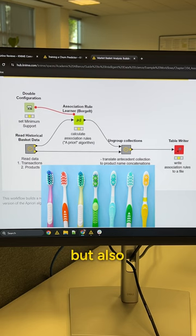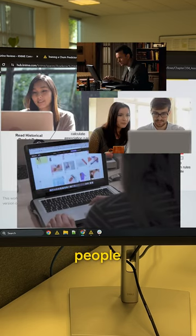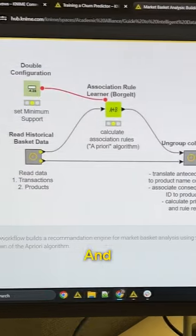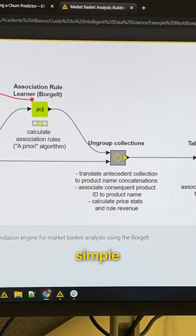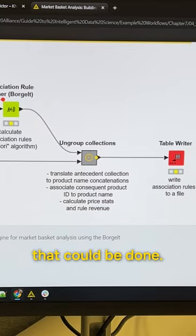And they're looking not just at your purchase history but also the purchase history of other people to be able to make those recommendations. And we can use certain algorithms to be able to do that in KNIME for the market basket analysis and you see a simple workflow here that demonstrates how that could be done.